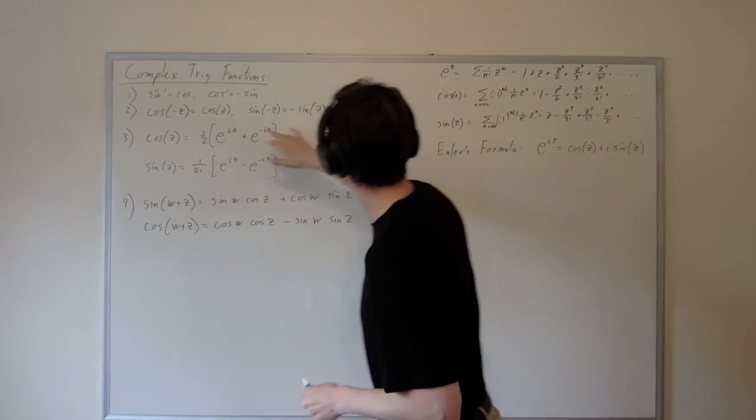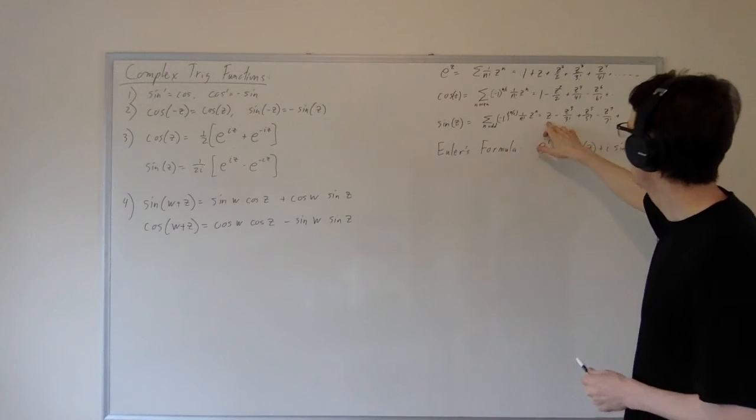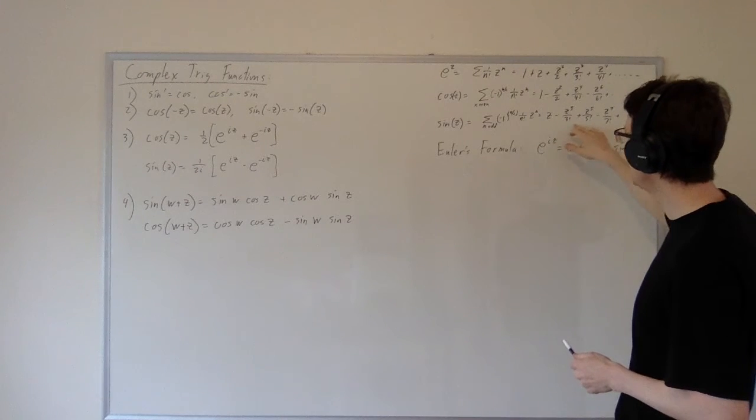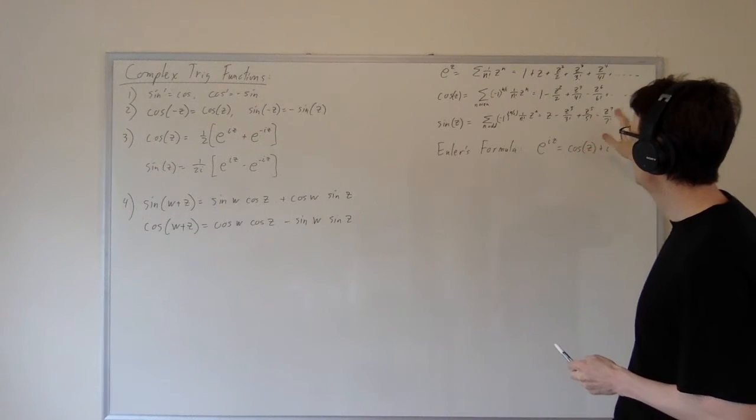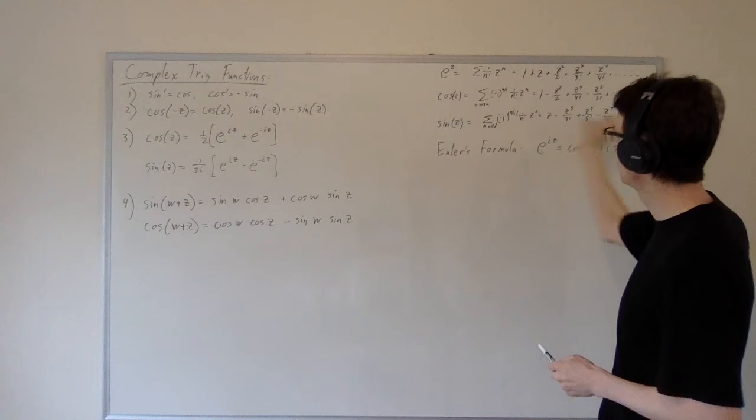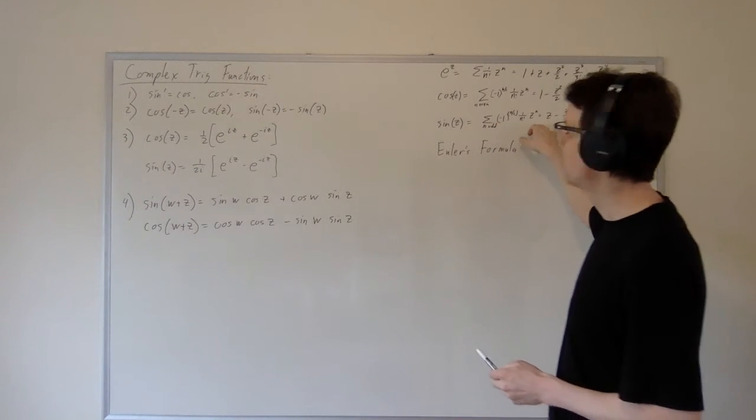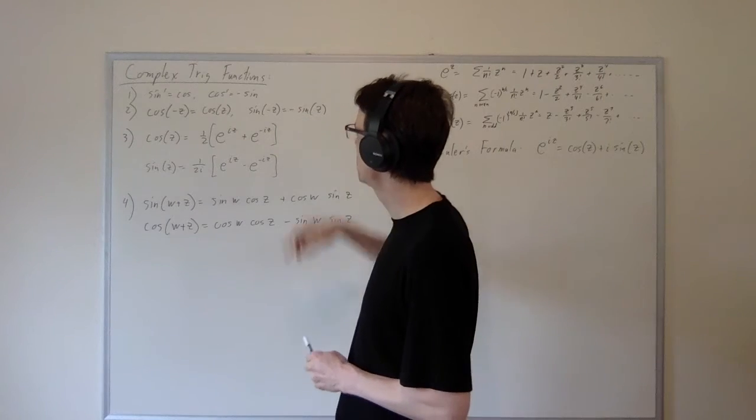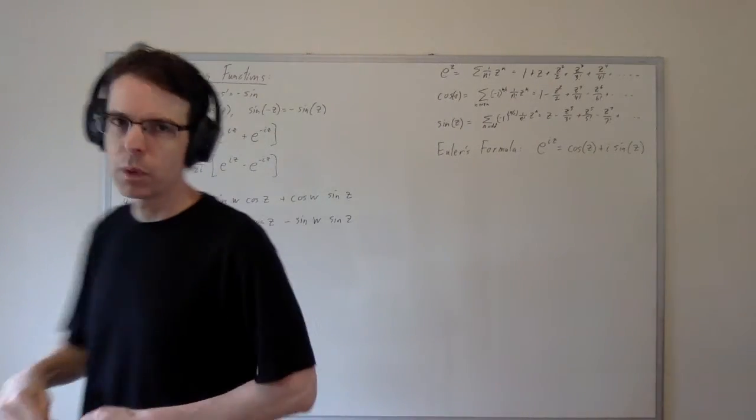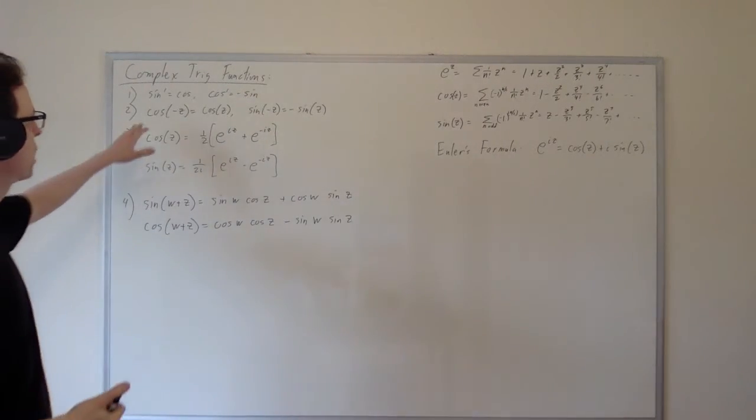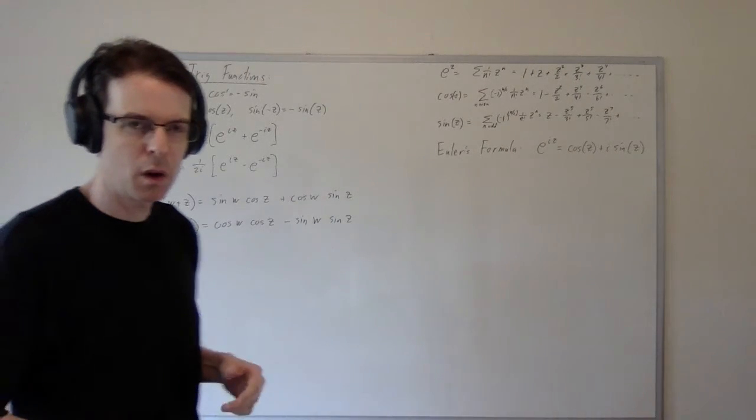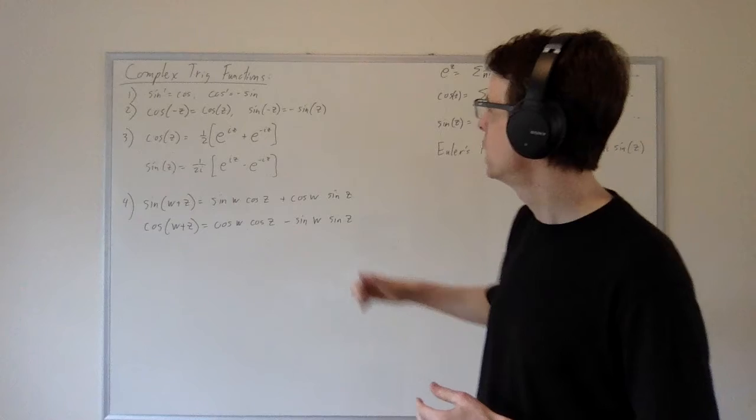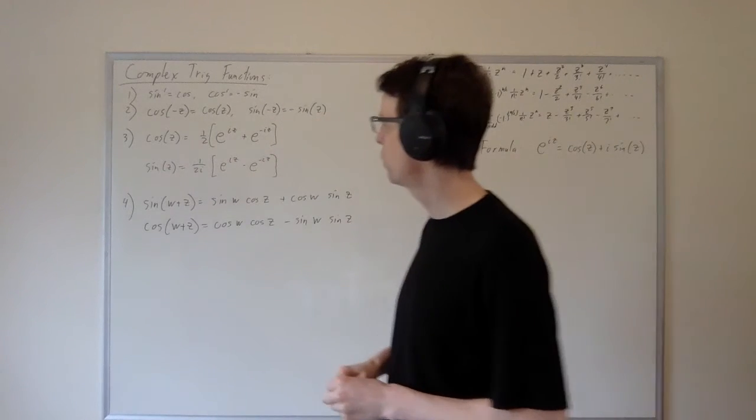If we plug in minus z to the formula for sine of z, then we always get odd powers of minus one, and any odd power of minus one is minus one. So we can take all of those odd powers of minus one and sweep them out to make just one minus sign, and that's why sine of minus z is minus sine of z. So those are the basic even and odd properties of sine and cosine. They are familiar from the real theory, but notice that these apply for all z.